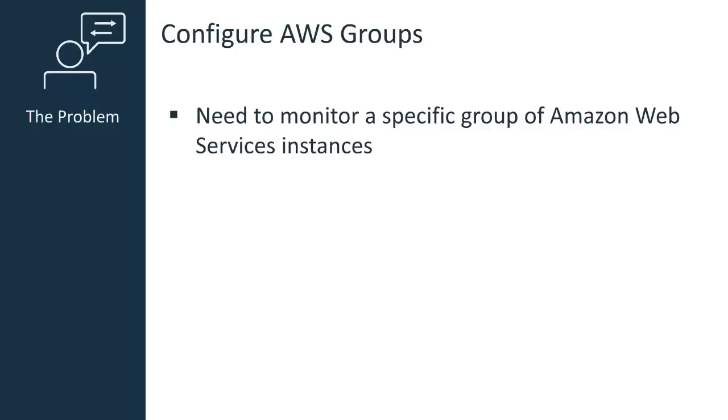In this scenario, I need to create a group of Apache instances that are used for general product demonstrations. This will allow me to monitor the status of a specific group of Amazon Web Services instances in Unified Service Manager.